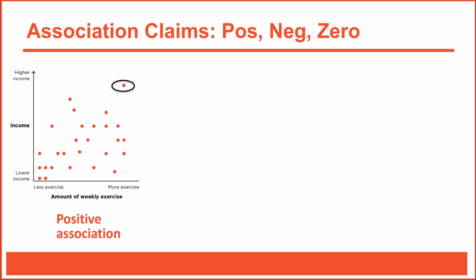As you get experience looking at scatter plots, you begin to notice trends in the data. In this scatter plot you might notice that those who exercise more tend to have higher incomes, and those who exercise less tend to have lower incomes. If I were to draw a straight line that best fits all the data points, it might look like this. The positive slope of the trend line helps us see that this is an example of a positive association, also known as a positive correlation. When the association is positive, the two variables tend to move in the same direction at the same time — increases in one variable are associated with increases in the other, and decreases in one are associated with decreases in the other.